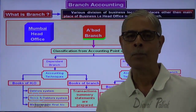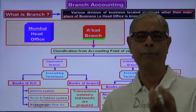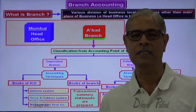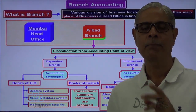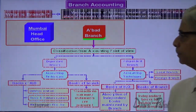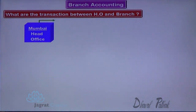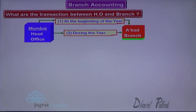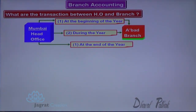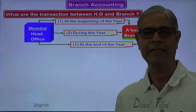Now I want to focus on data system. While talking about data system, I am also going to mention the important points of distinction between data system and stock and data system. My main focus is to explain data system, and at the same time I will mention the distinguishing points between data system and stock and data system. What are the transactions between HO and branch? At the beginning of the year, the branch accounting entity is created during the year. There are transactions between HO and branch. At the end of the year, the branch existence is absorbed by HO. This is the normal situation in case of data system.